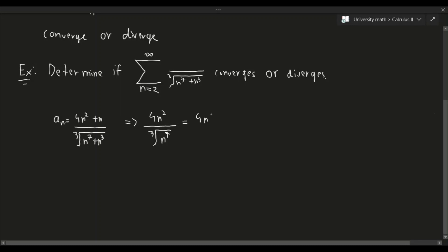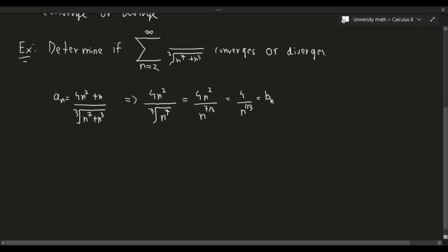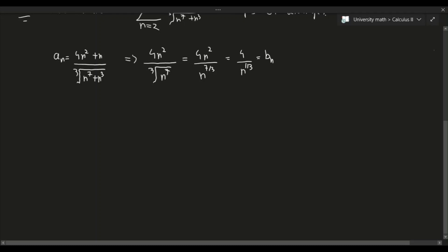So we get 4n² over n^(7/3), which simplifies to 4 over n^(1/3). This is going to be our bₙ. This is how we determine the second series to use for the comparison.